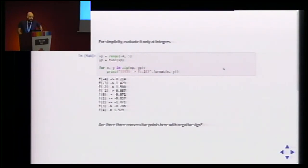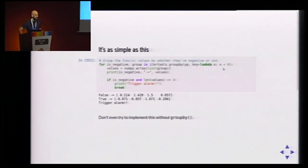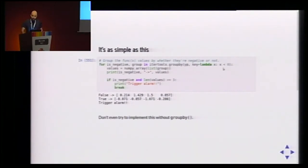The beautiful way to solve it: use groupby, but not with the equality key. We group values by whether they are negative or not — the key is 'are you less than zero?' Every time the key changes, we get a new group. The first group's key is False because all elements are positive. The second group's key is True — it's negative — and we had at least three elements, so yes, the condition is met and we trigger the alarm.